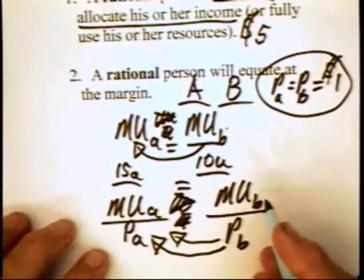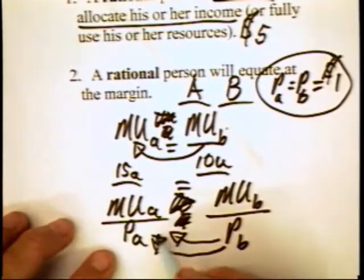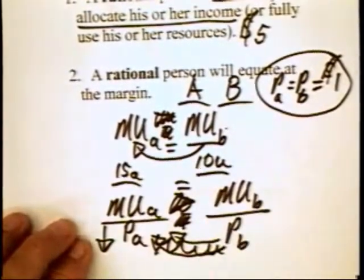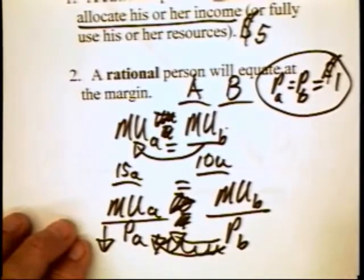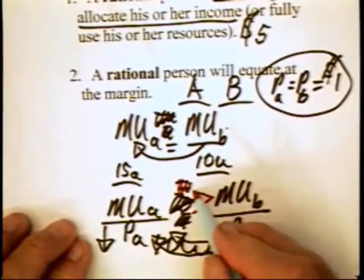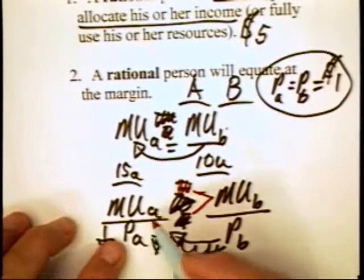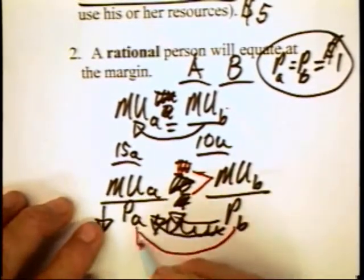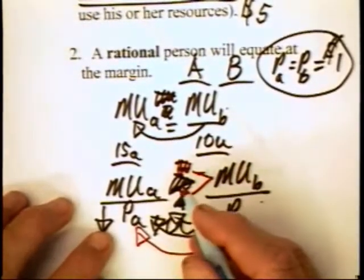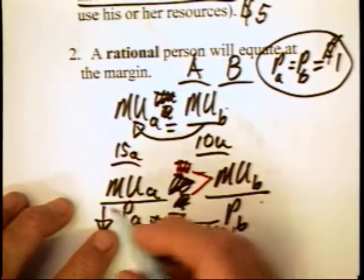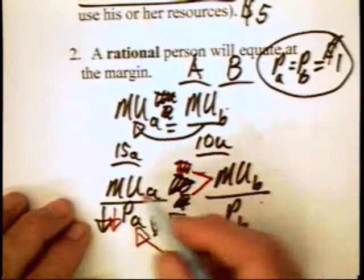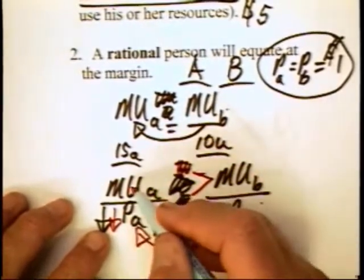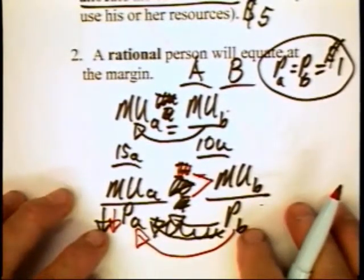Once we've established equality, or consumer equilibrium, let's suppose that the price of A goes down. If the price of A goes down, the ratios are no longer equal — the marginal utility of the last penny spent on A now becomes greater than the marginal utility of the last penny spent on B. The individual should once again move from B into A. You lower the price of A and the consumer equilibrium is upset. People will naturally gravitate from B to A. The price of A goes down, the quantity of A purchased goes up — that is nothing more than a statement of the Law of Demand.